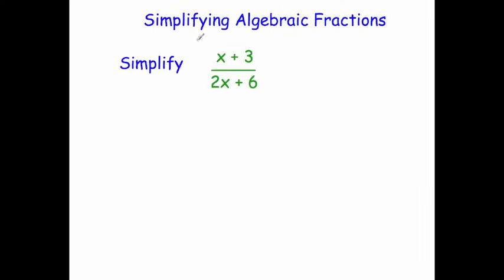Let's have a look at an example. Here we've got x plus 3 over 2x plus 6. The top line, the numerator, we can't factorise that — that's just x plus 3. Whereas the denominator, we've got 2x plus 6. That can be factorised; we can take the 2 out, giving us 2 bracket x plus 3.